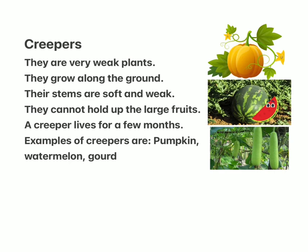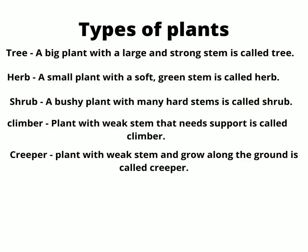Creepers are very weak plants. They grow along the ground. Their stems are soft and weak — they cannot hold up large fruits. A creeper lives for a few months. Examples of creepers are pumpkin, watermelon, and gourd.